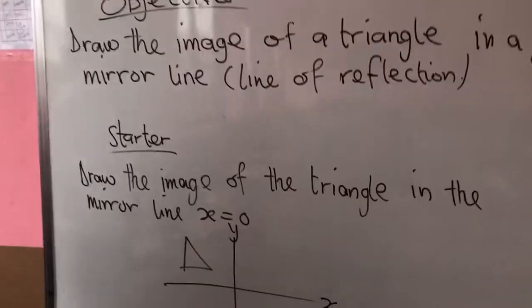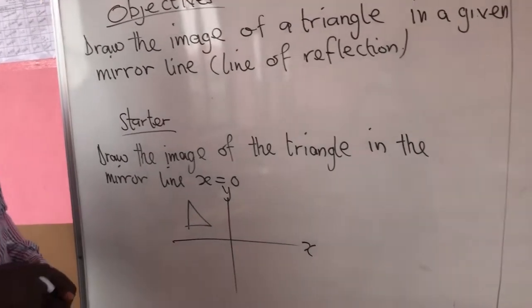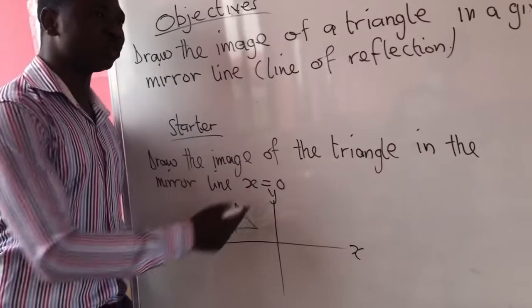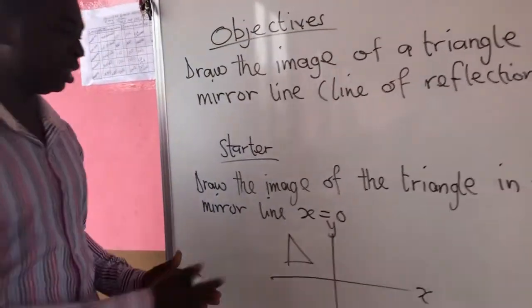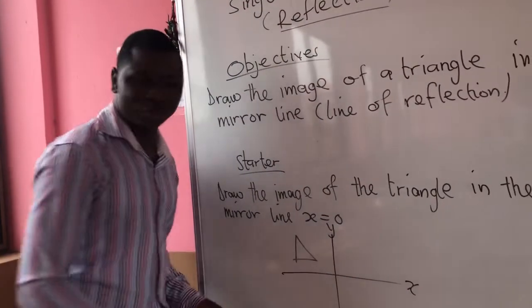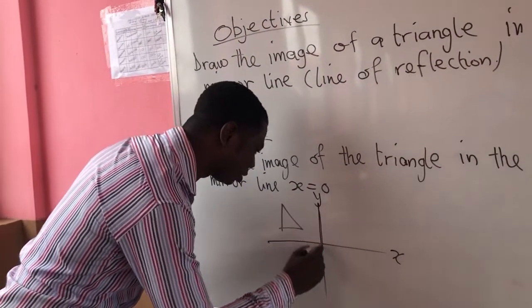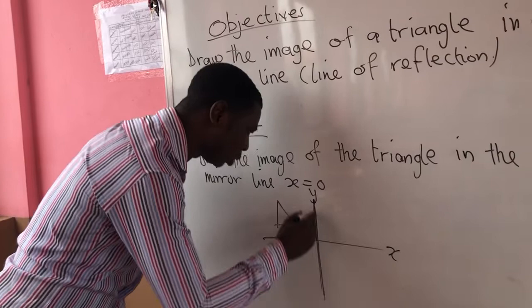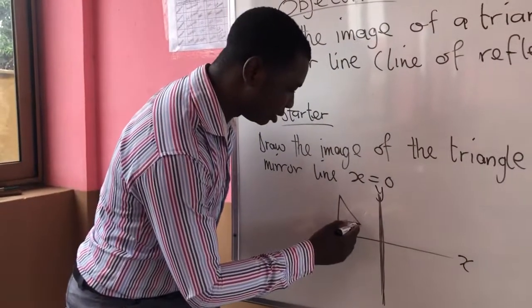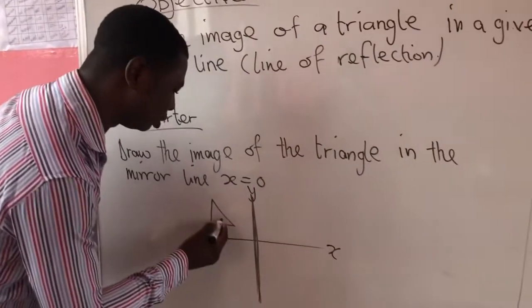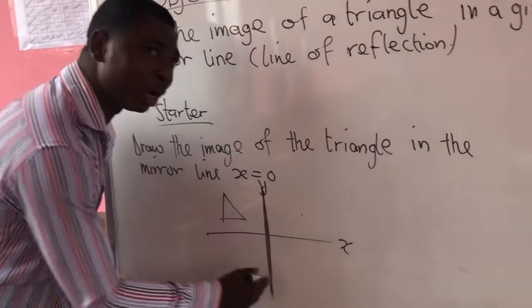Let's take this as our starter: draw the image of the triangle in the mirror line x equal to 0. When we say x equal to 0, we reflect using the mirror line — the y-axis. So x equal to 0 means our mirror line is the y-axis.